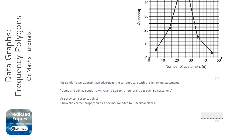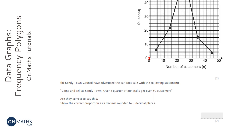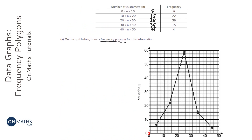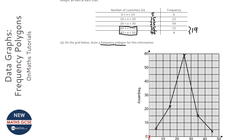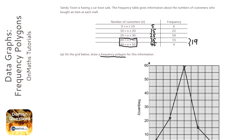The town council is claiming that over a quarter of the stalls get over 30 customers. We're going to check whether that's right. Over 30 customers means the groups 30 to 40 and 40 to 50. Those two groups give us 19 altogether, so that's 19 out of a total of 6 + 22 + 59 + 15 + 4 = 106.